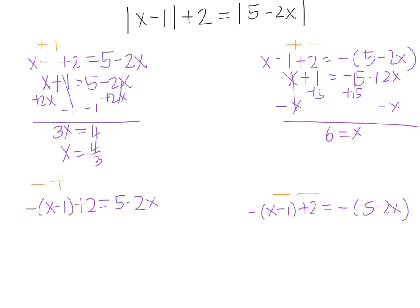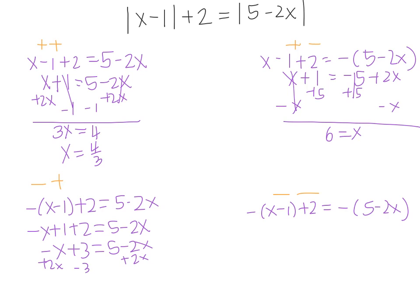Moving on. Distributing gives negative x plus 1 plus 2 is equal to 5 minus 2x, so negative x plus 3 is equal to 5 minus 2x. Add 2x to both sides and subtract 3 from both sides, giving x is equal to 2.